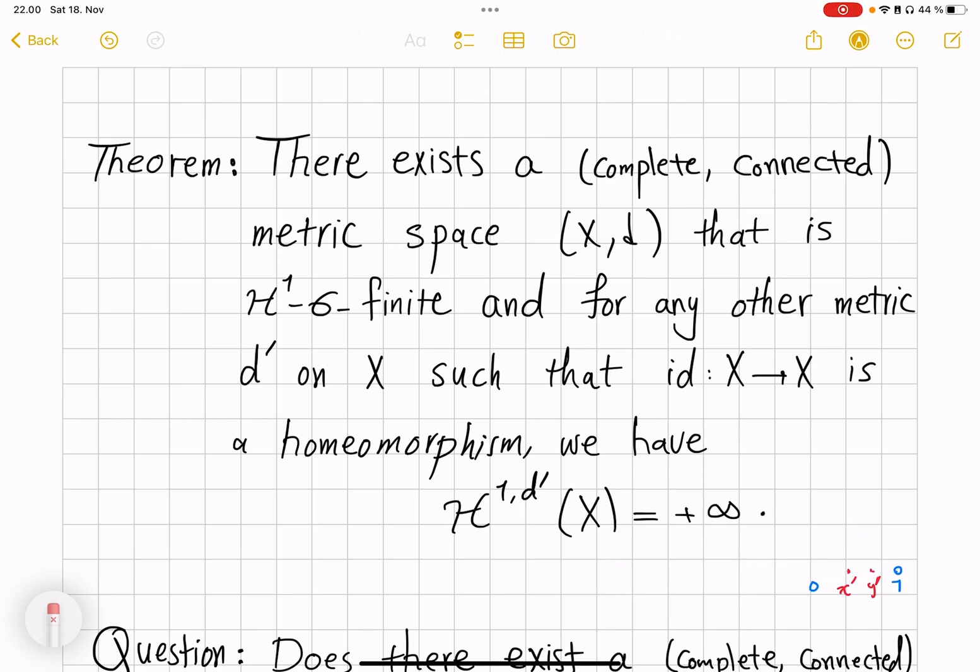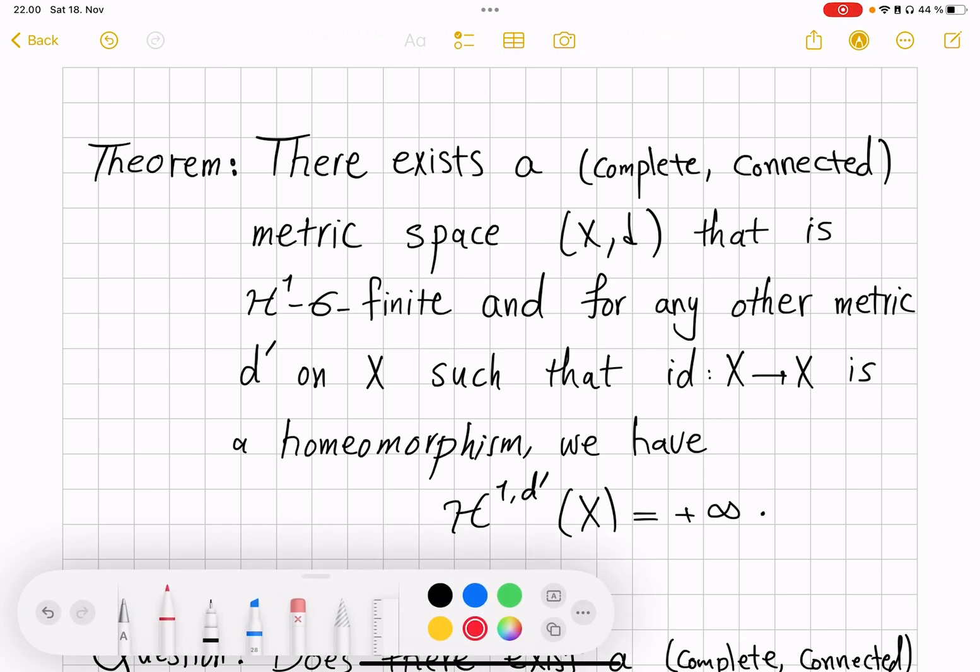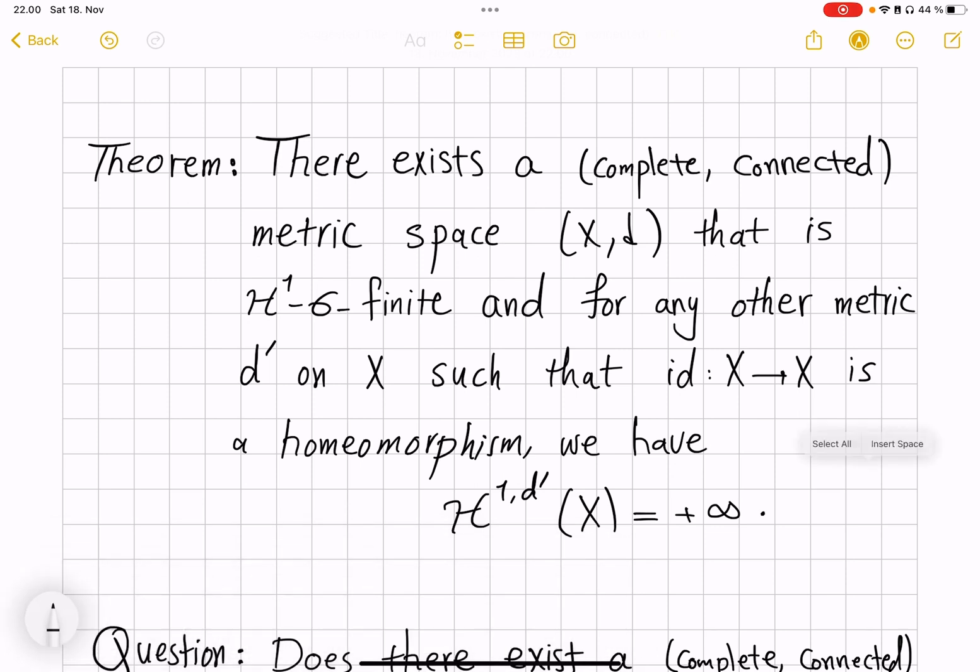So there does exist R^1, just taking a line is not an example of such space, but there does exist a metric space that is truly H^1 sigma finite. You cannot turn it into finite measure space as long as you keep the same topology.